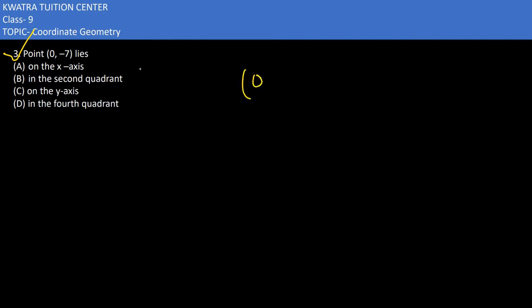Here in the third one, it says point (0, -7). This would lie on the y-axis because x is 0 and y has some value. This means it lies on the y-axis in the negative direction. So this would be option C.